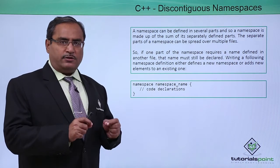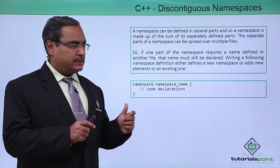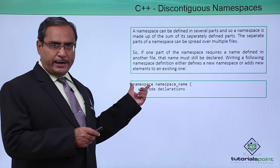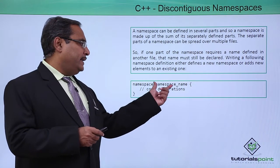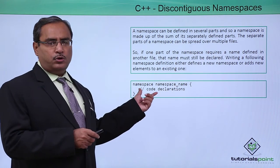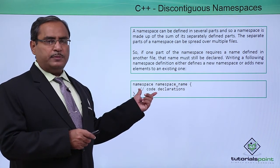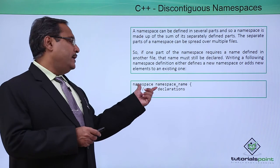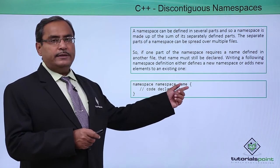We know the syntax of defining one namespace. The namespace keyword is to be mentioned, and then the namespace name has to be written, and then respective code - whatever variables, whatever functions we are going to define - that can be defined within these curly braces.